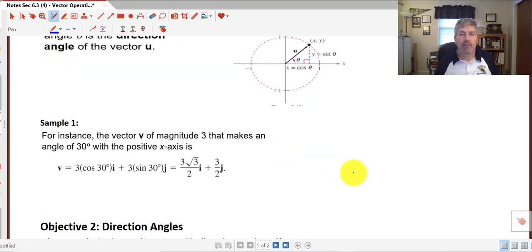So let's take a look at a sample. For instance, the vector v of magnitude 3 that makes an angle of 30 degrees with the positive x-axis is denoted here. V equals 3 times the cosine of 30i plus 3 times the sine of 30j gives our answer. How do we get that?